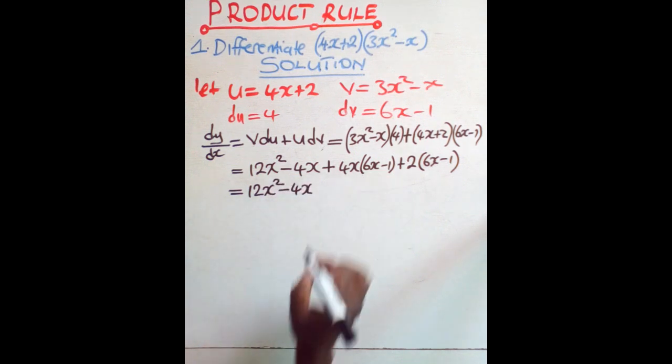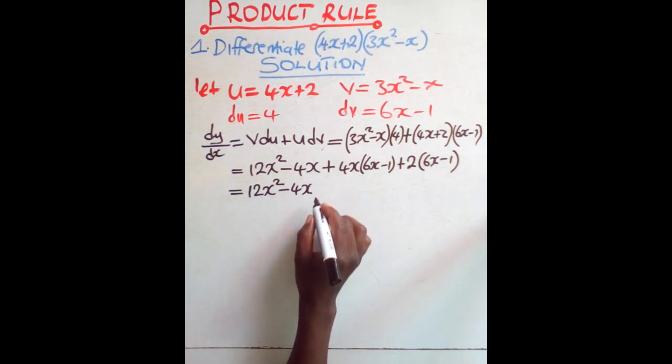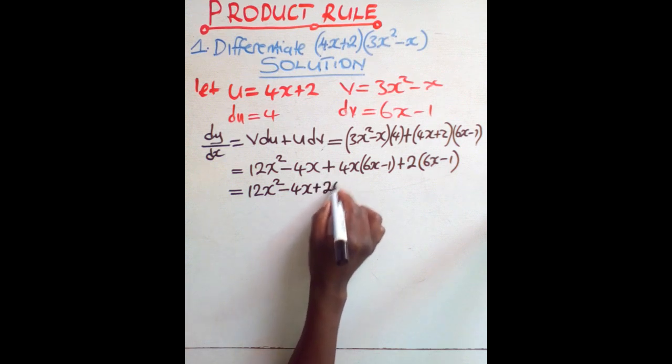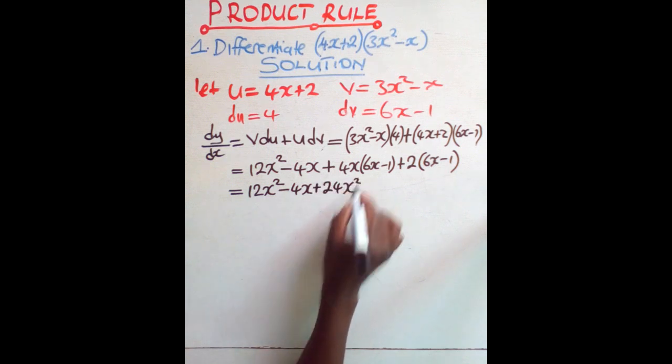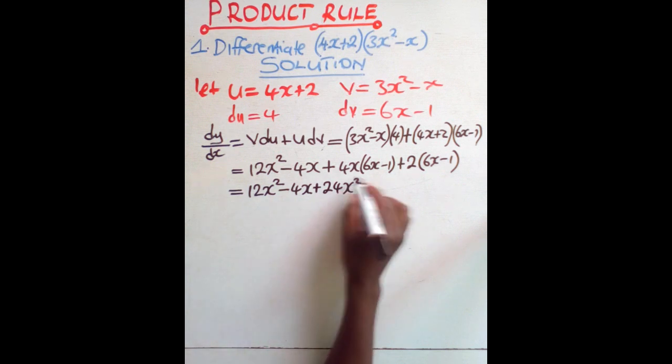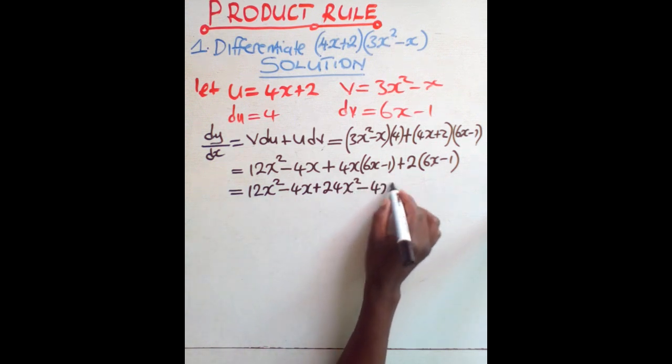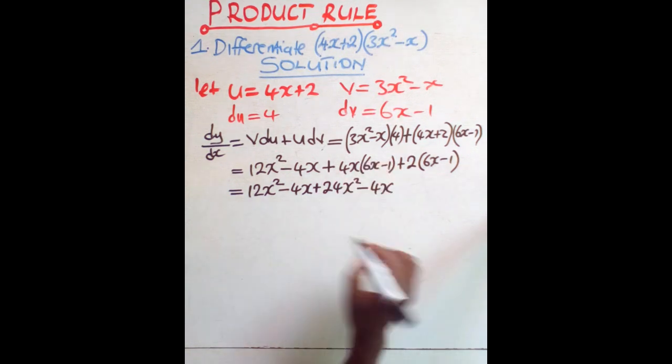So then in this case, what do we have? We have this is equal to 12x squared minus 4x. 4x times 6x is going to give us 24x squared, so plus 24x squared. 4x times negative 1 is going to give us negative 4x.